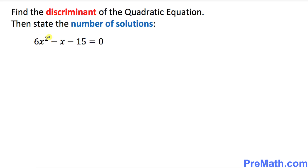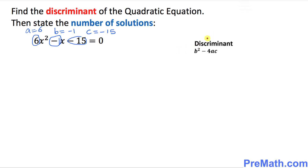The very first thing is to look at the coefficients of this quadratic equation. Here, a equals 6. There is a negative sign, so the coefficient is negative 1, meaning b equals negative 1. This negative 1 is the coefficient of x, and the constant c equals negative 15.